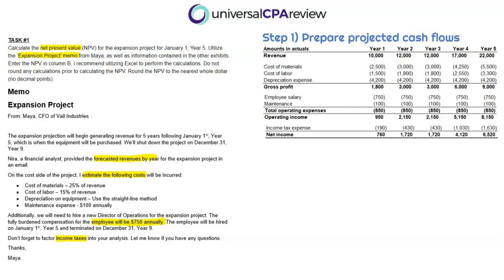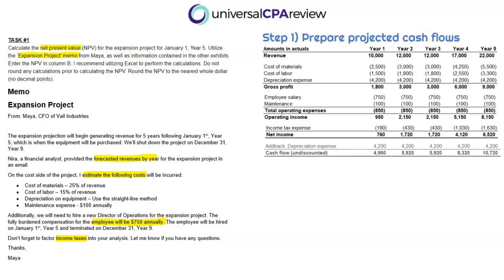Please do not forget about income tax expense — that is a required cash outflow, and we have to pay taxes on our earnings. The income tax rate is 20%, so we multiply operating income by 20% to get the income tax expense for each period. Subtracting that gets us to net income. Now, a common mistake is forgetting that we're going for cash flow, not net income. We must add back depreciation expense because it's a non-cash item — we don't actually pay cash when we record it. Adding back depreciation gets us to our annual cash flow by period.